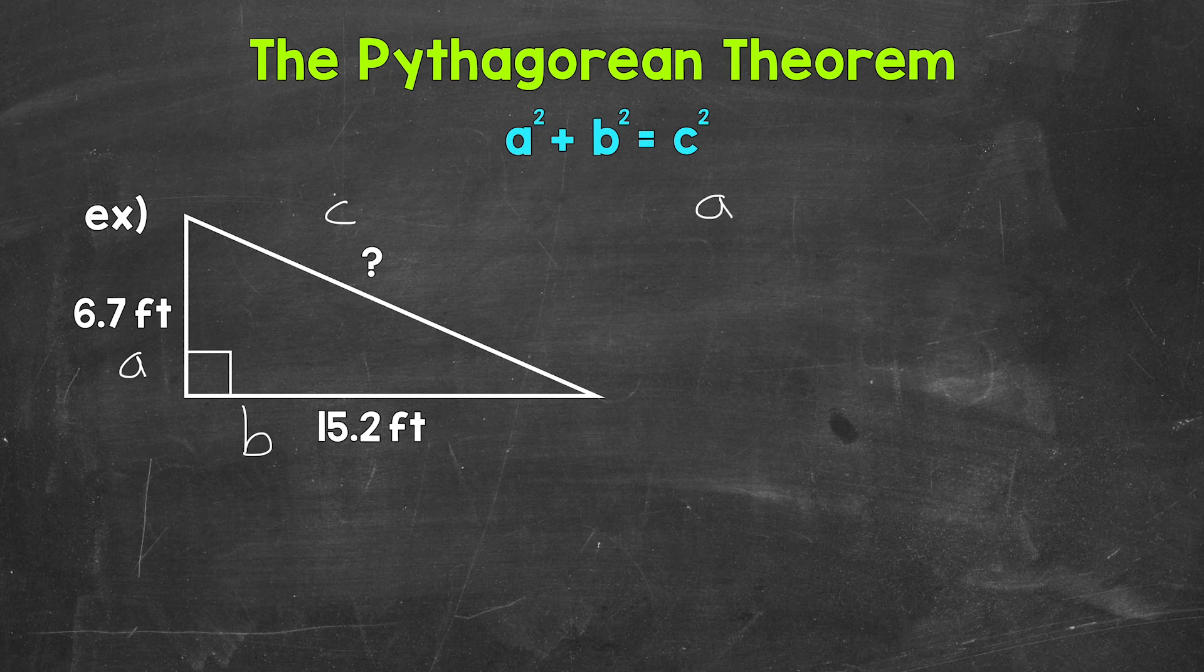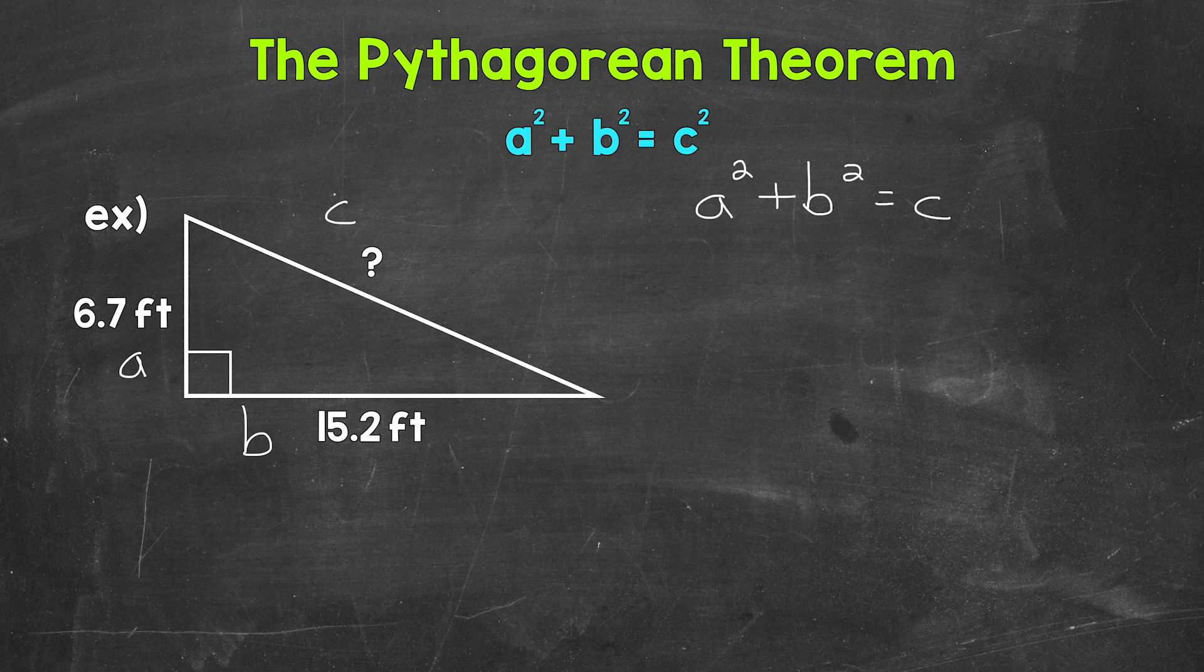So we are going to use a squared plus b squared equals c squared. Now we can plug in what we are given and work through this equation in order to figure out the length of the hypotenuse.